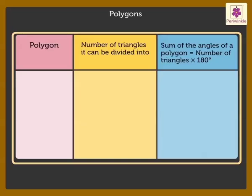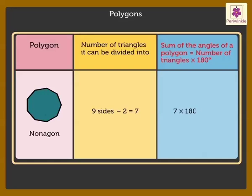Next, let us look at a nonagon. Number of triangles it can be divided into is equal to seven. Therefore, the sum of its angles is 1260 degrees.